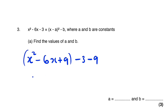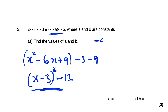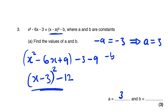This gives us x minus 3, all squared, minus 12. The negative a equals negative 3, which implies a equals 3. And negative b equals negative 12, which implies b equals 12. So a is 3 and b is 12.